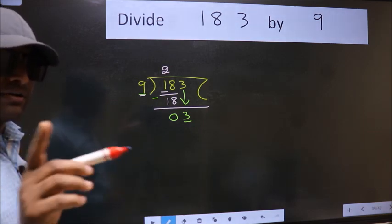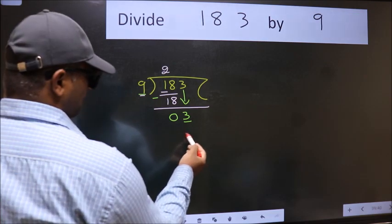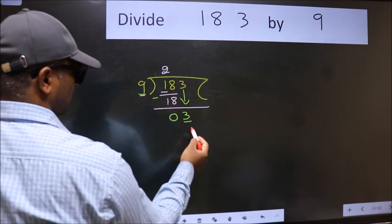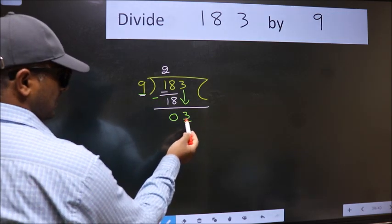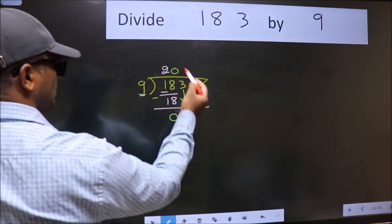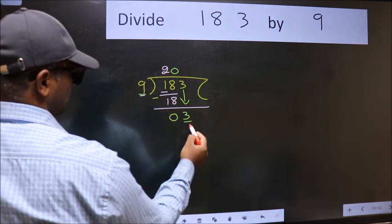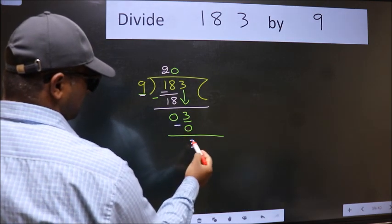Instead of that, what we should think of is which number should we take here. If I take 1, we will get 9, but 9 is larger than 3. So what we do is we take 0. 9 into 0, 0. Now we subtract. We get 3.